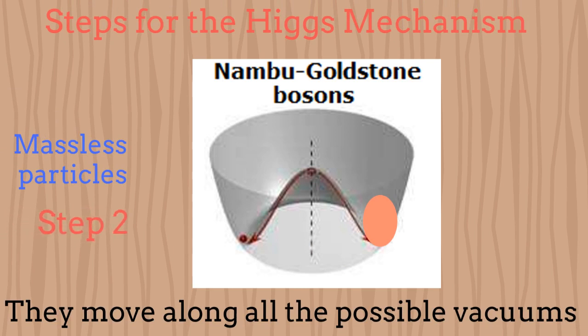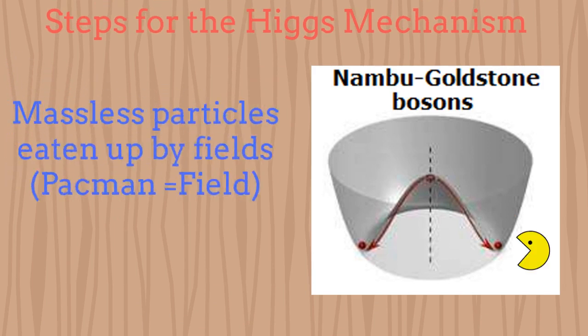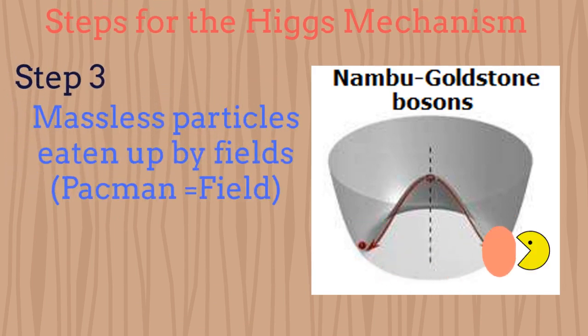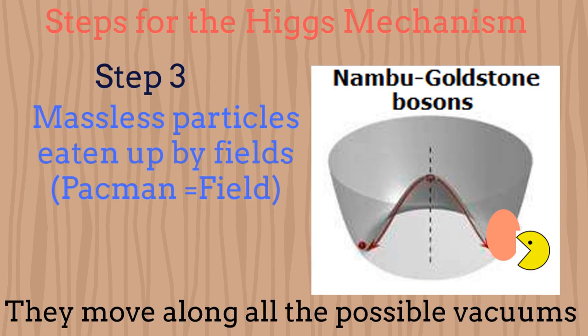In physics, we consider each scalar particle as one degree of freedom. Step 3: the Nambu-Goldstone bosons, moving along all the possible final vacuum states, are finally eaten up by some fields once the final vacuum state is selected arbitrarily. The fields eating the Nambu-Goldstone bosons could be vector fields or tensor fields, for example. The Pac-Man on the figure represents a field eating one Nambu-Goldstone boson.